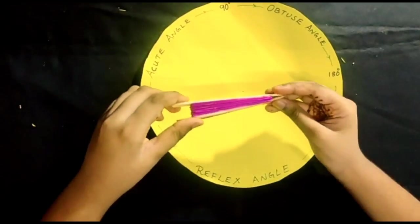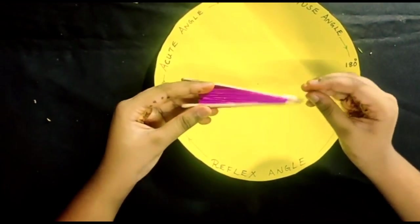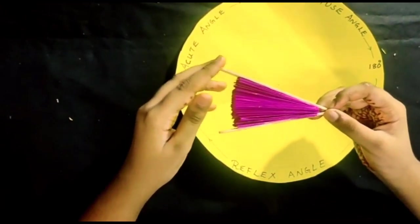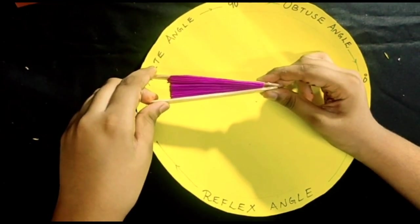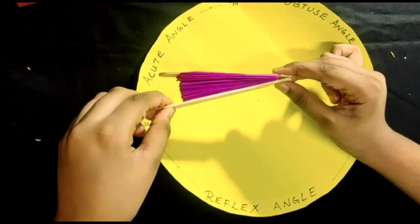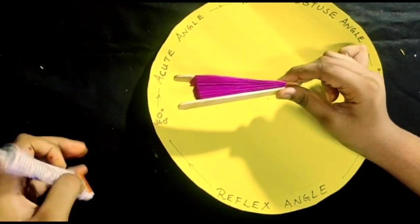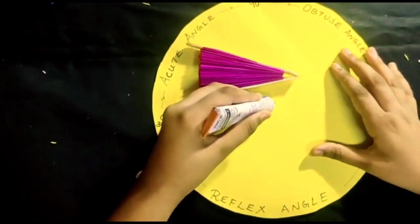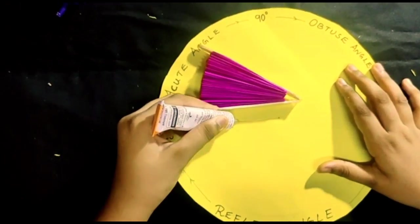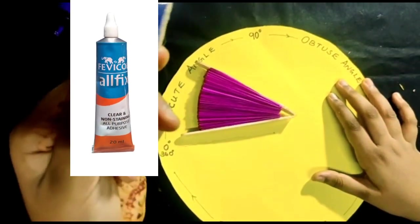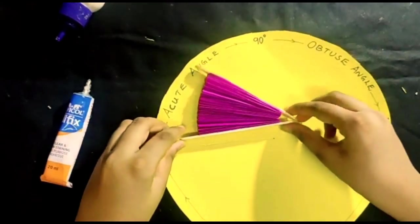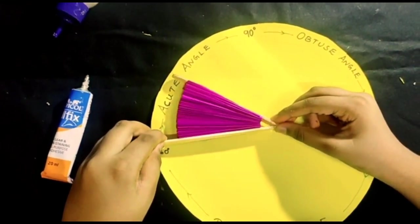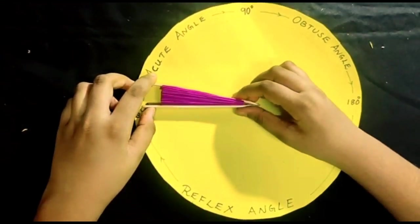Now this is the angle. These two are arms and this is the common vertex. This is initial arm and this is terminal arm. Now we have to take the initial arm and fix it at 0 degree.